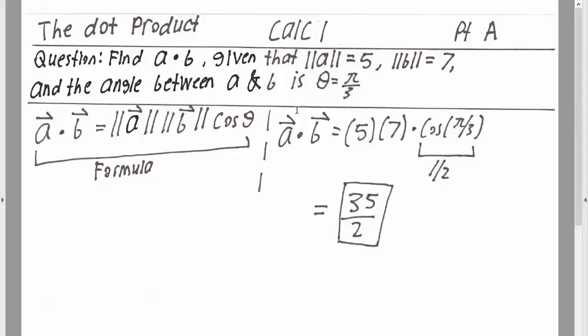So for us, the magnitude of A was 5, the magnitude of B was 7, and the angle between A and B was π/3. Once you multiply this whole part together, we get 35/2. And that's it.